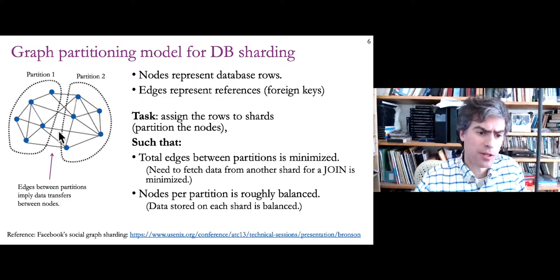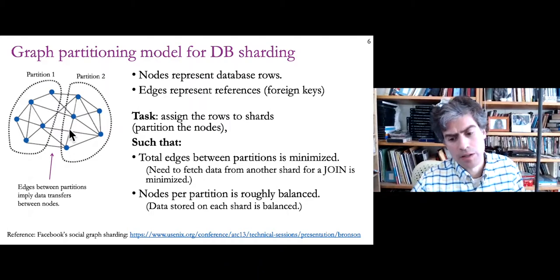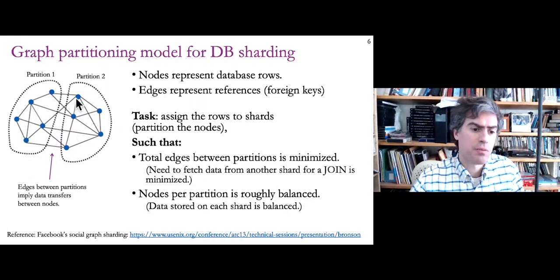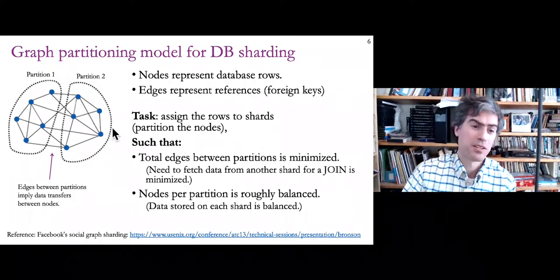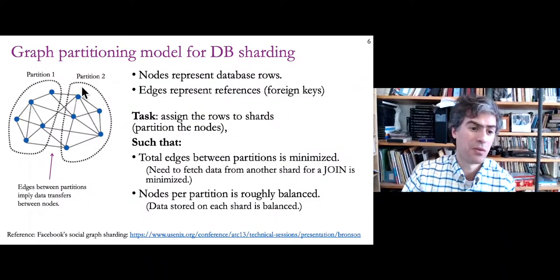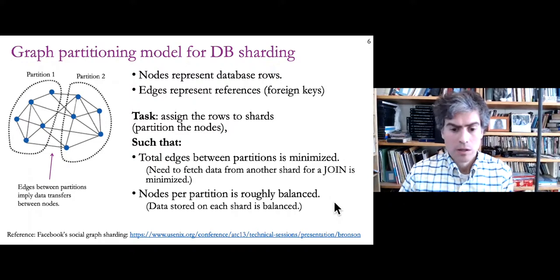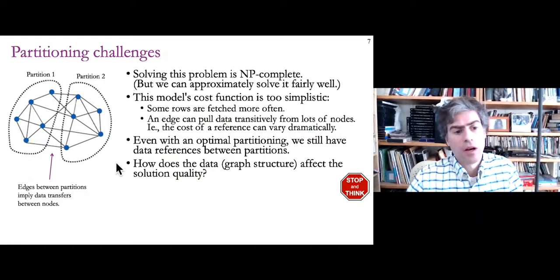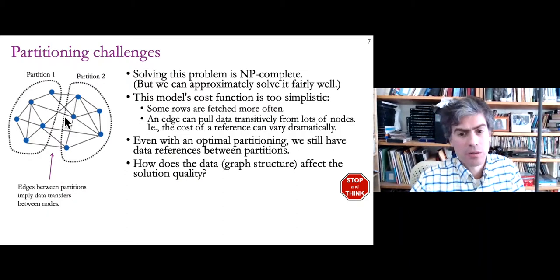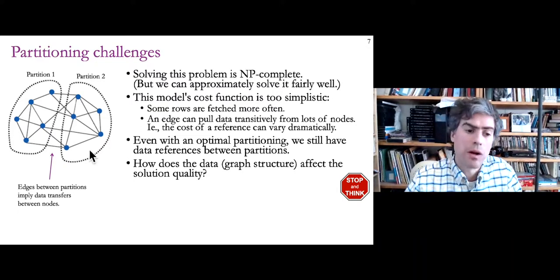This is the graph partitioning problem: split the nodes into two balanced partitions minimizing the number of crossings. If we put all nodes in one partition, we haven't actually partitioned it. Solving this problem well is difficult — it's actually NP-complete. But being NP-complete doesn't necessarily mean it's intractable; we can approximately solve it fairly well with heuristic algorithms.